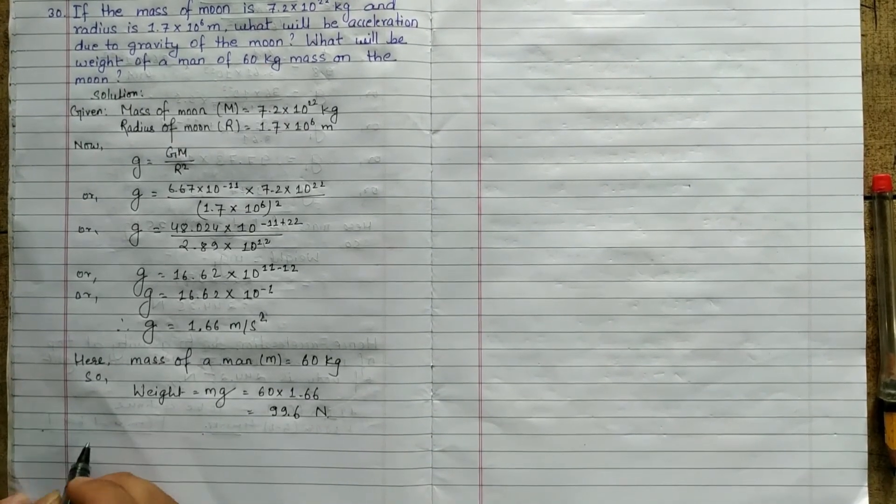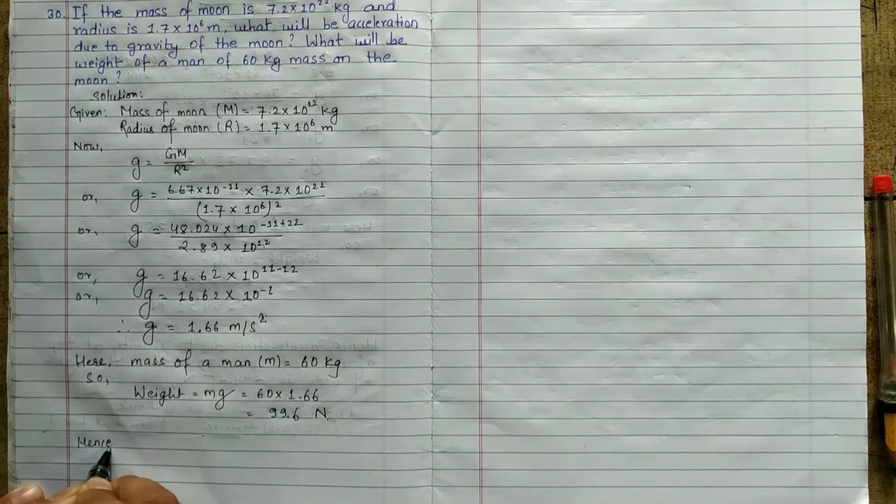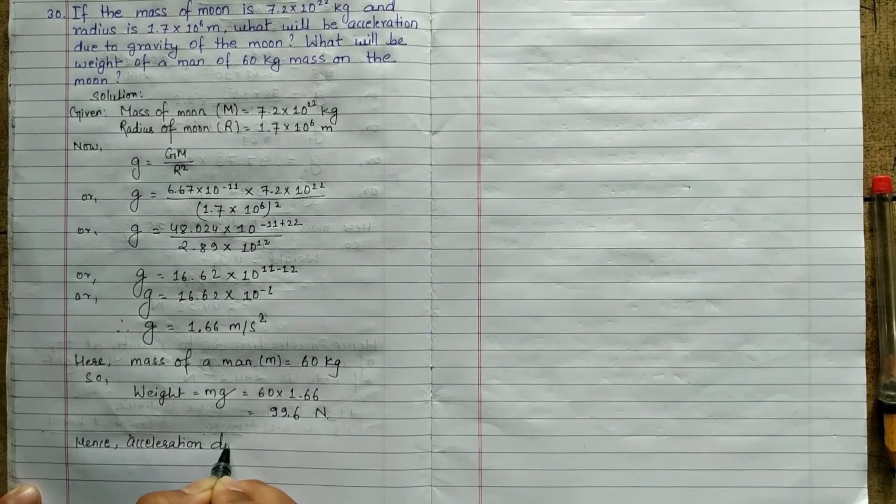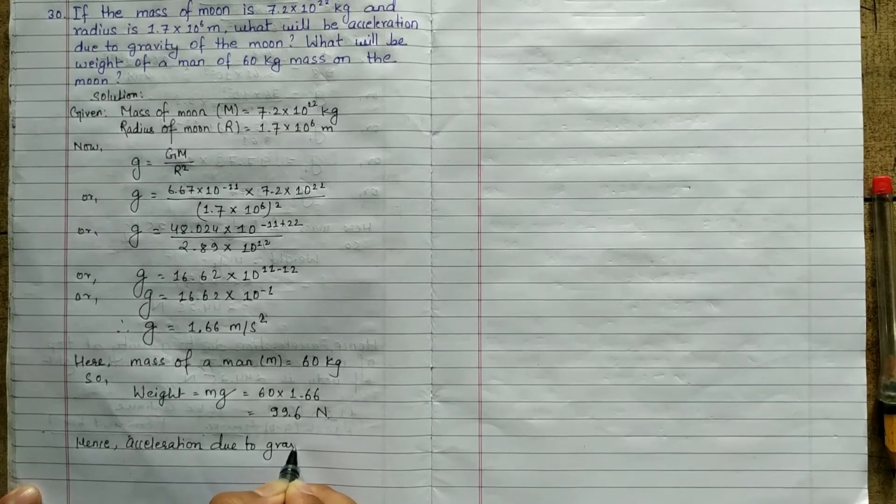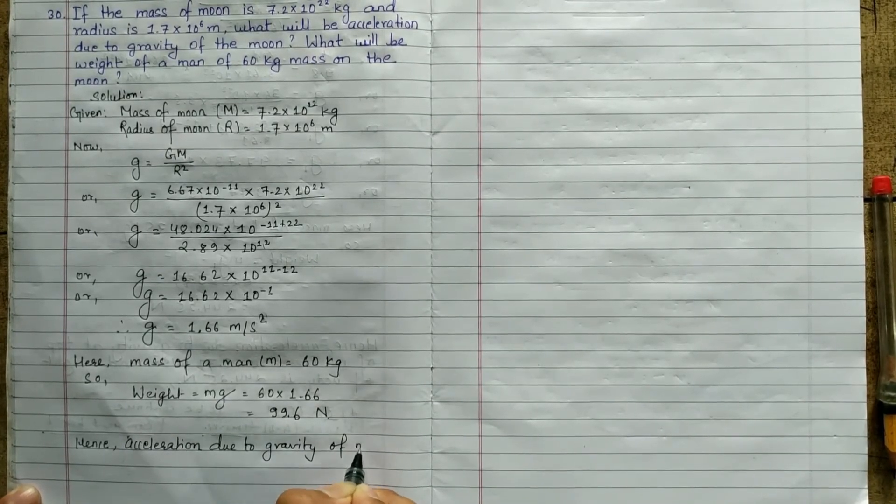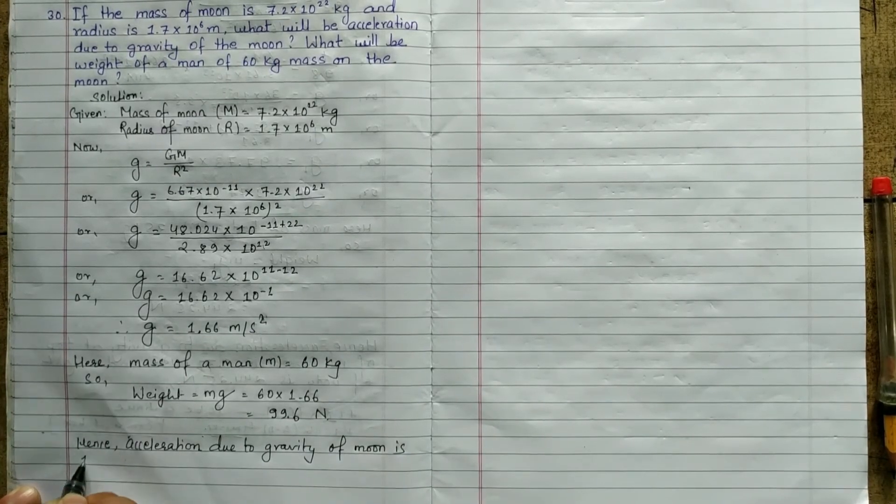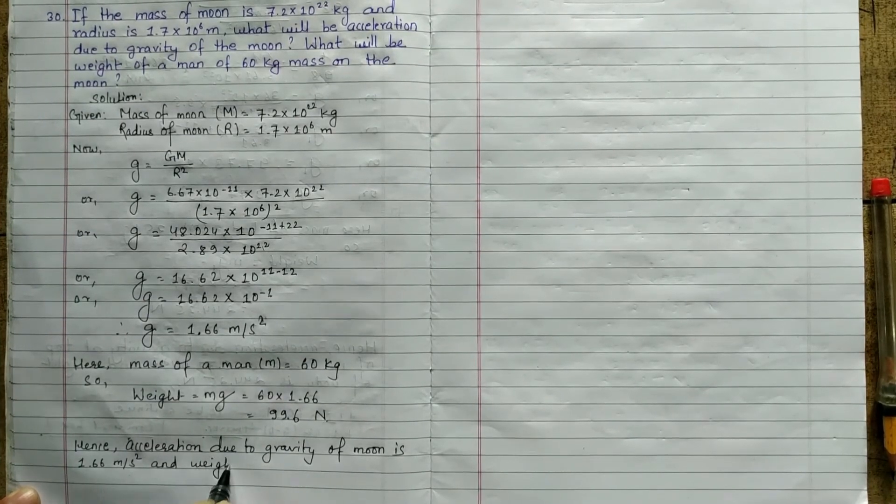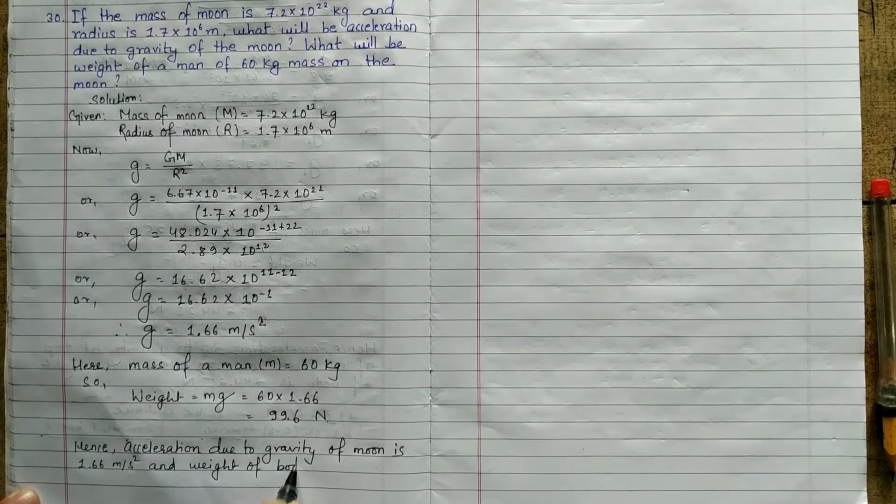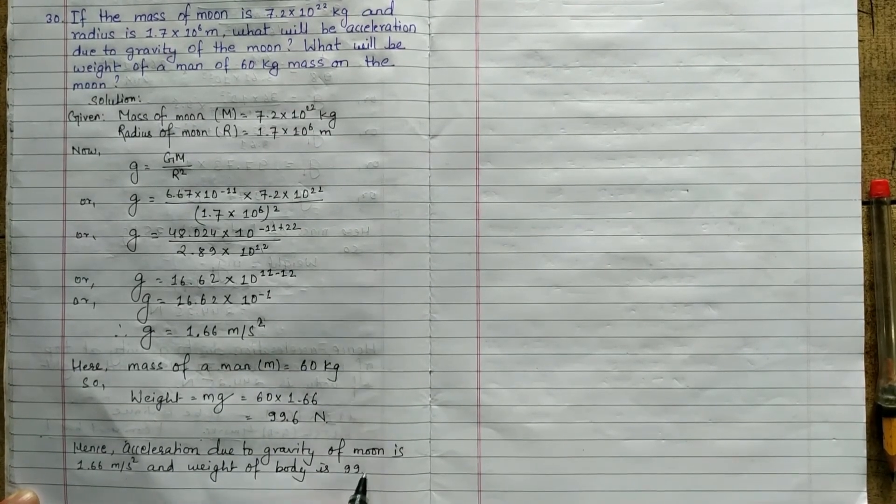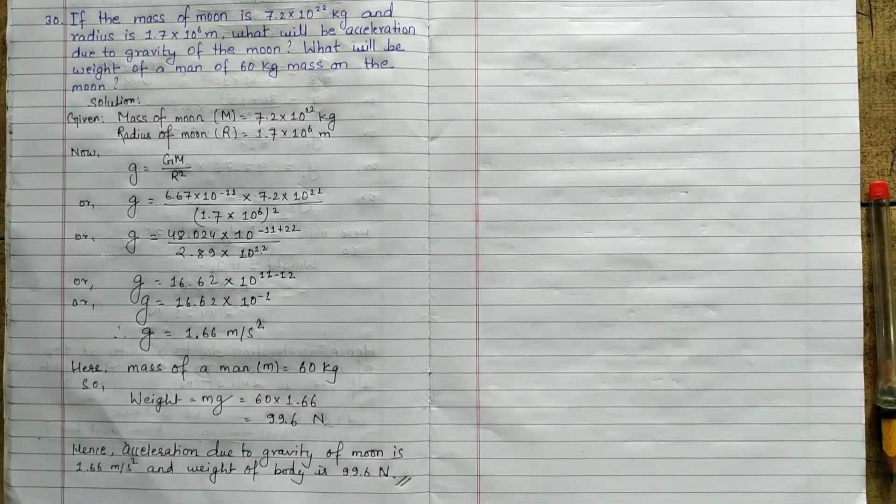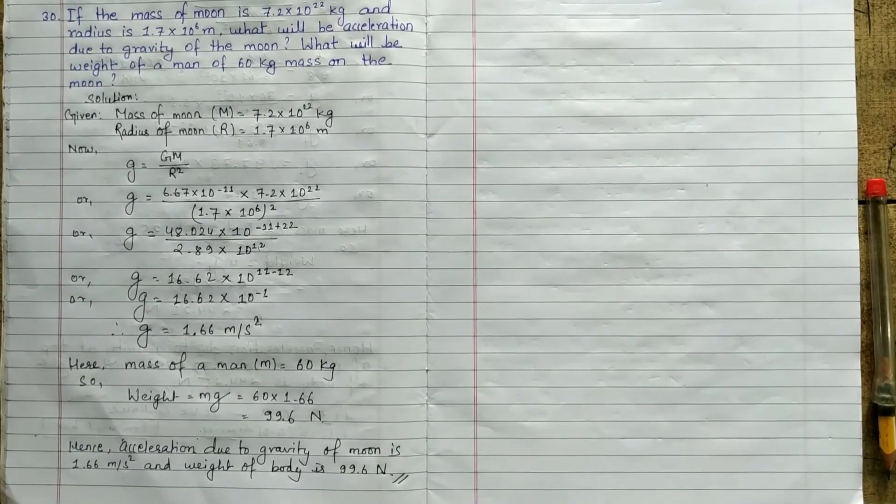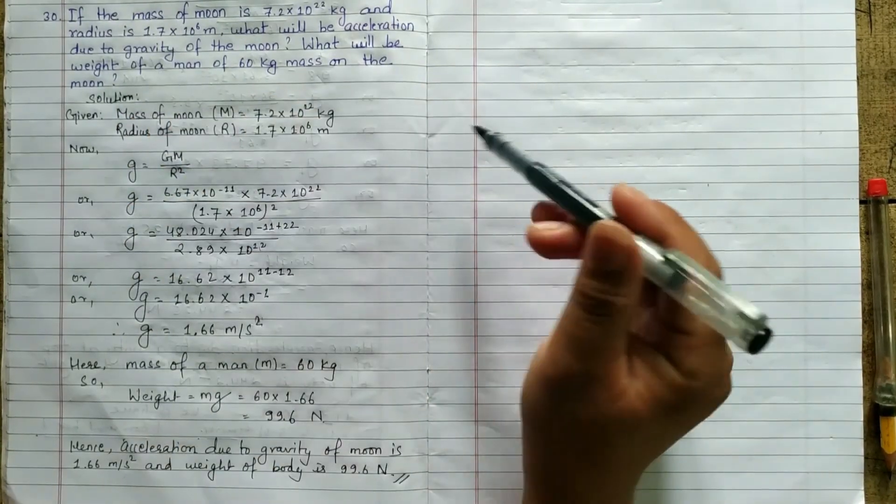Hence, acceleration due to gravity of moon is 1.66 meter per second square and weight of body is 99.6 Newton.